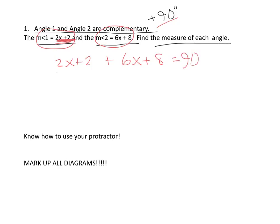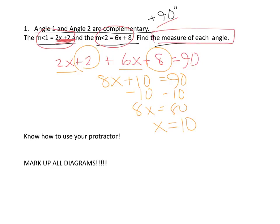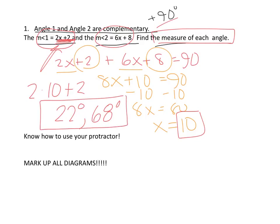Now I'm going to combine like terms. 8x plus 10 equals 90. Subtraction property of equality, 8x equals 80. Division property of equality, x equals 10. That's not my answer right now. I need to stop and make sure I answer the question. The question is find the measure of each angle. So now I need to plug in 10 in here. So it's 2 times 10 plus 2. So this angle is 22 degrees. Which makes the other one, if it adds up to 90, this one has to be 68 degrees. Or you could plug in 10 and see that 6 times 10 plus 8 is 68. So here's my answer and it makes sense because they both add up to 90.